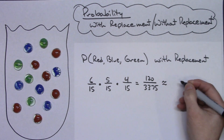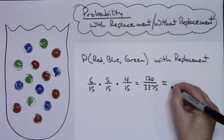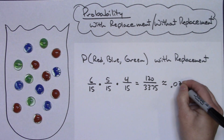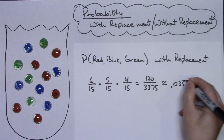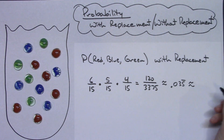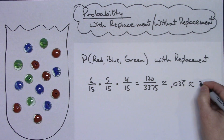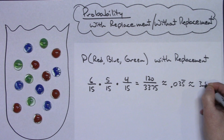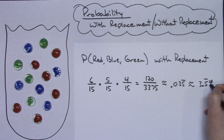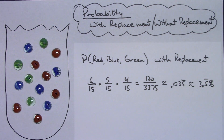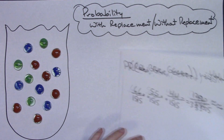So that's your probability. If you want to write it as a decimal, it's about 0.035 repeating, and as a percent that's about 3.5 repeating percent. That's the concept of with replacement.